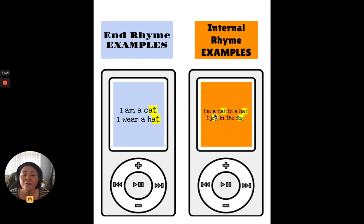However, if you took that I'm a cat in a hat, and then you made it in a different poem, I jog in the fog. This at and hat, do you see how it's in the same line? That is considered an internal rhyme. I jog in the fog. It's where these rhymes happen in a single line.